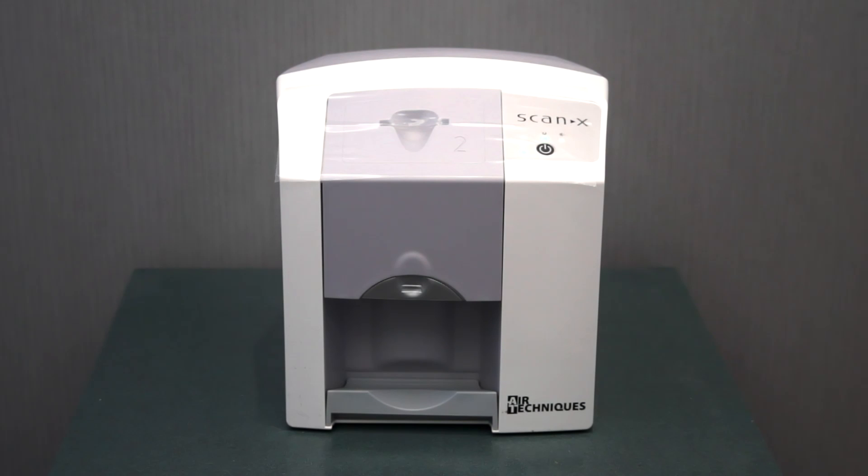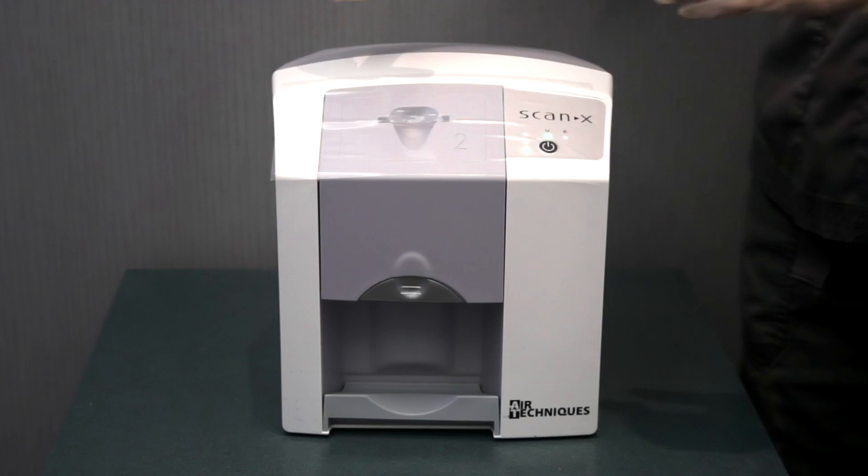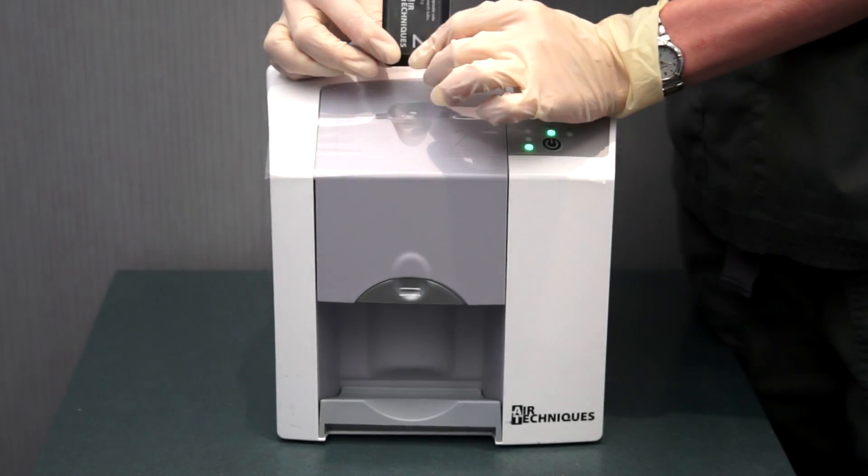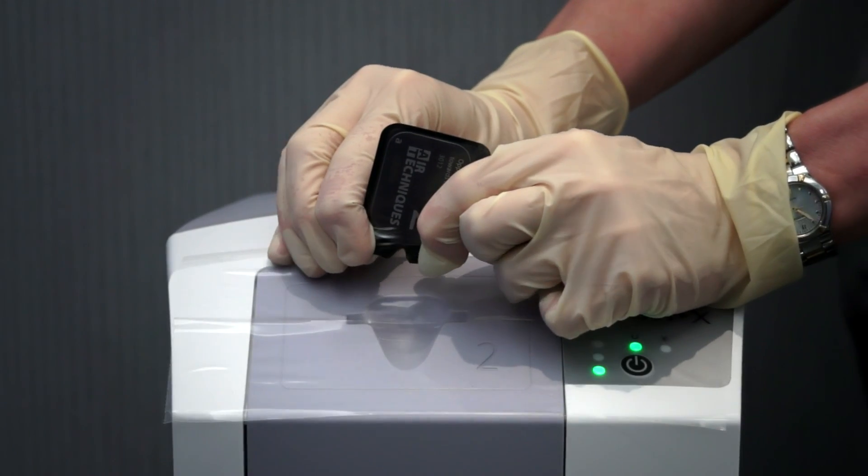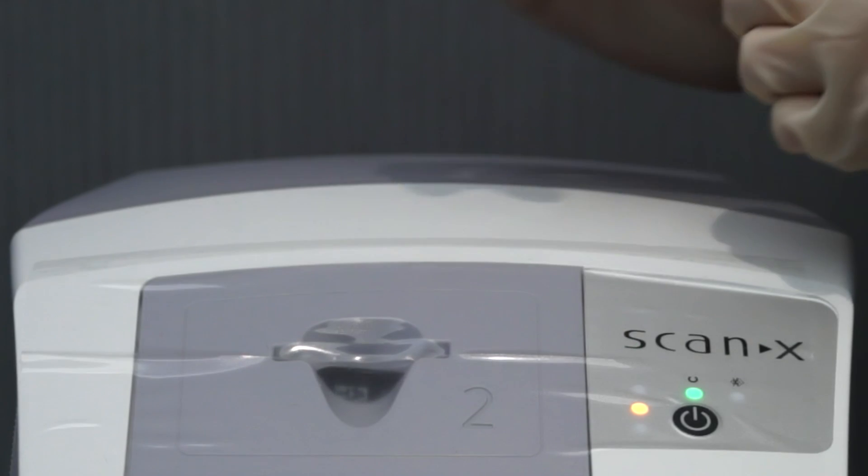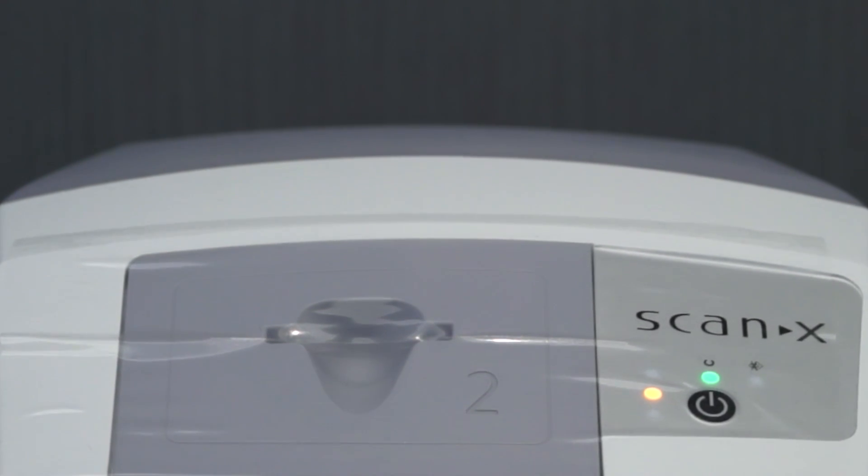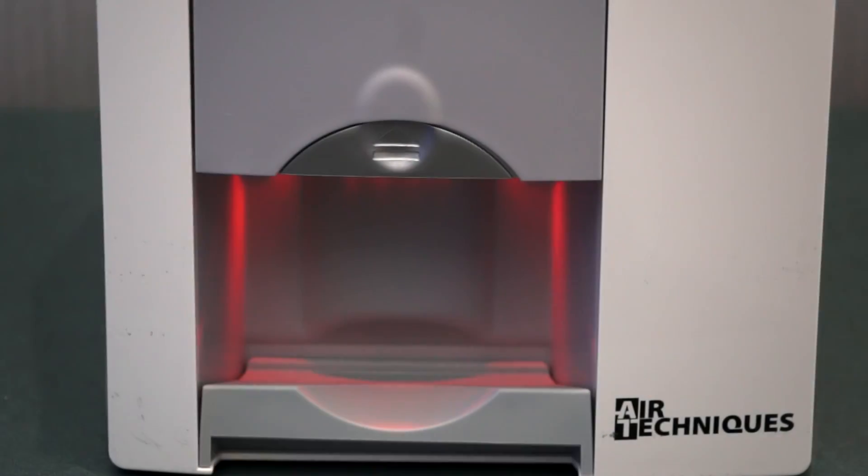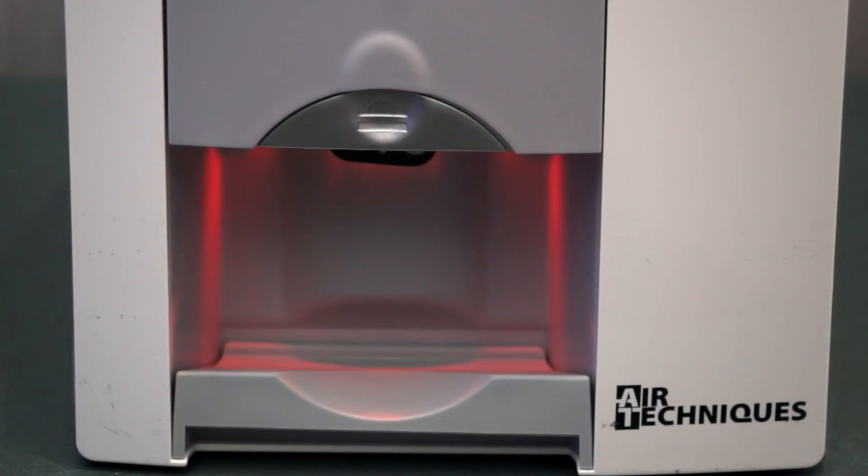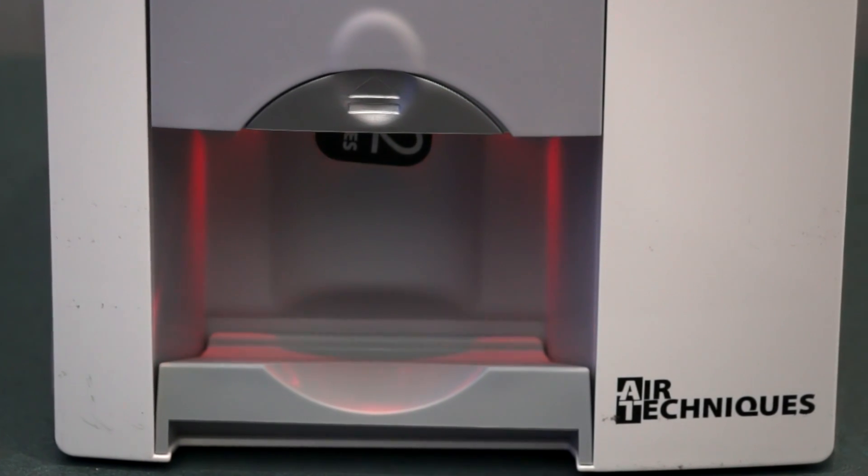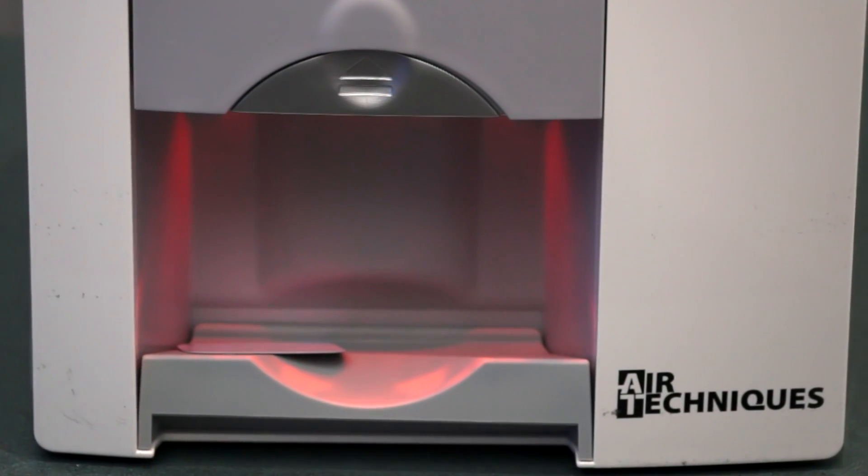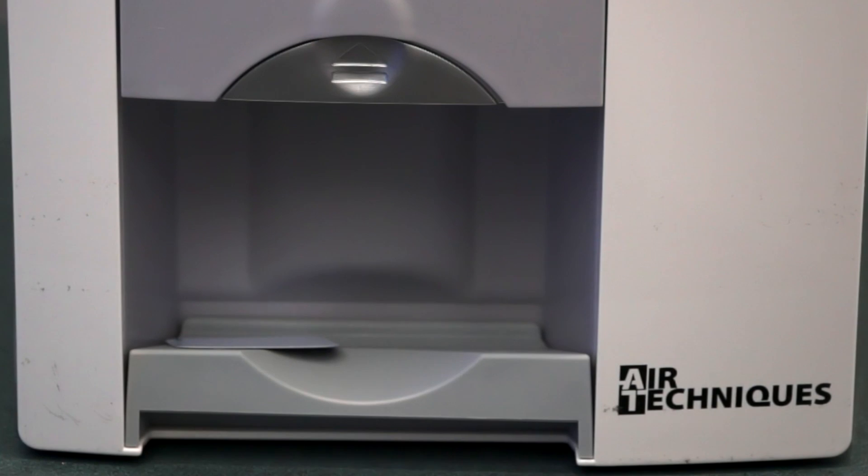Once the sensor has been radiographically exposed in the patient's mouth, it is brought to the ScanX Swift scanner. It is taken out of the infection control barrier, and the sensor is dropped into the slot on the scanner. The scanner will develop this over the next few seconds. The sensor, which is now being cleaned of information and is ready for the next use, drops out at the bottom of the Swift scanner.